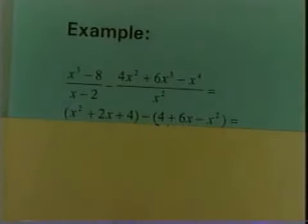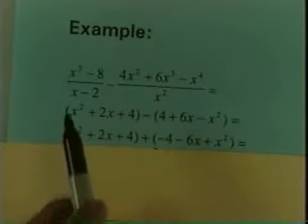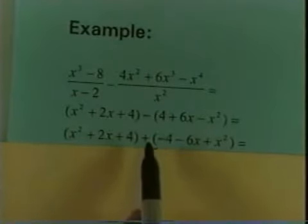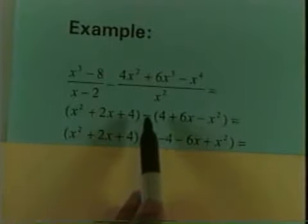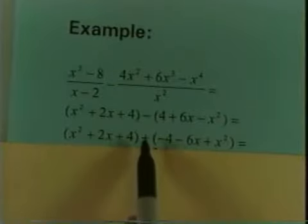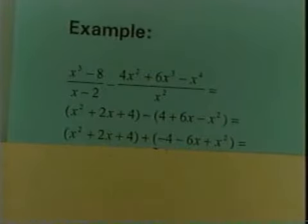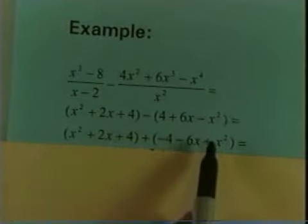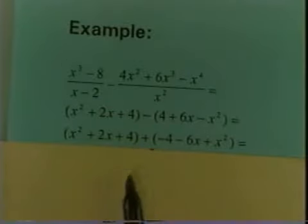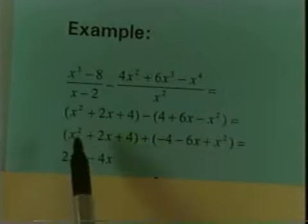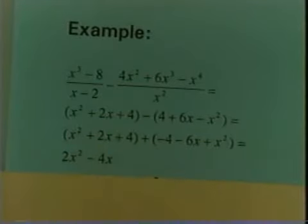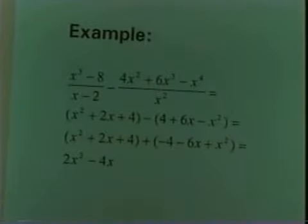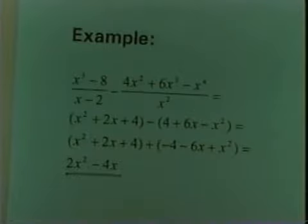Now to subtract, I add the opposite of the expression being subtracted. So I'll write down x squared plus 2x plus 4, then add the opposite of each term being subtracted: the opposite of 4 is negative 4, the opposite of positive 6x is negative 6x, and the opposite of negative x squared is positive x squared. Now that I have addition, I can combine like terms: x squared plus x squared is 2x squared; 2x plus negative 6x is negative 4x; and 4 and negative 4 gives 0. So the answer is 2x squared minus 4x.